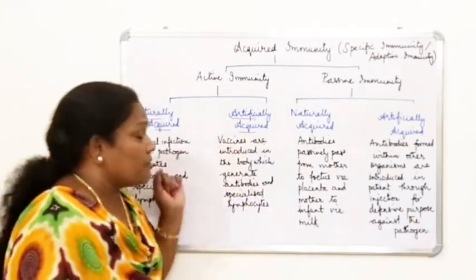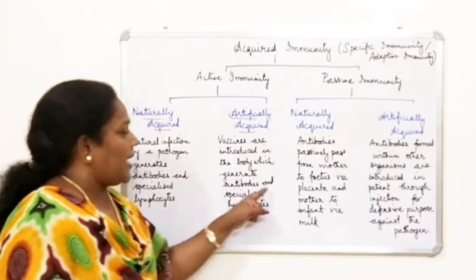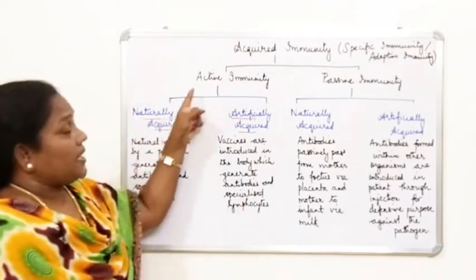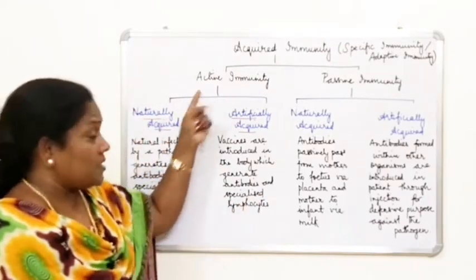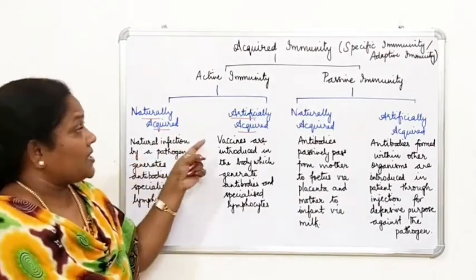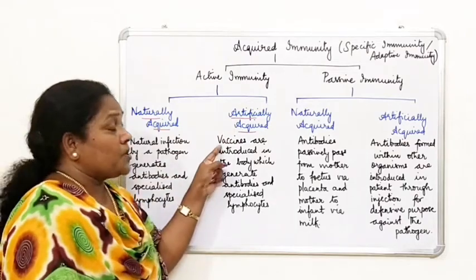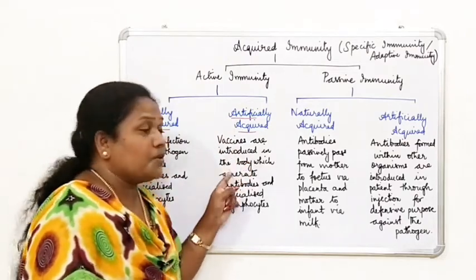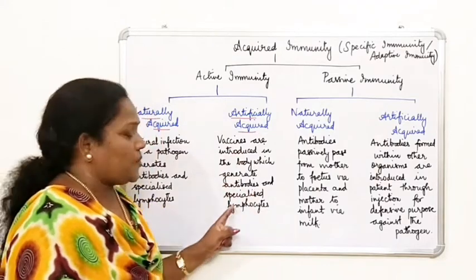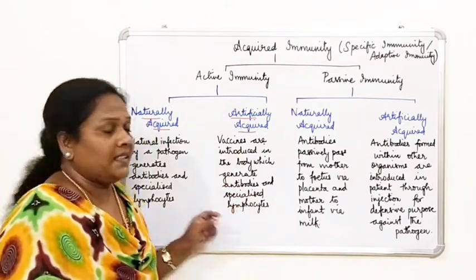Artificially active immunity is developed with the help of vaccines. When vaccines are introduced in the body, they help generate antibodies and specialized lymphocytes. To be clear: naturally active immunity is produced due to natural infection by a pathogen, whereas artificially active immunity is produced due to vaccines introduced into the body.